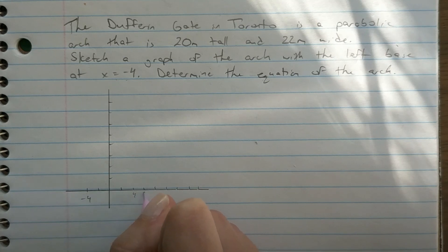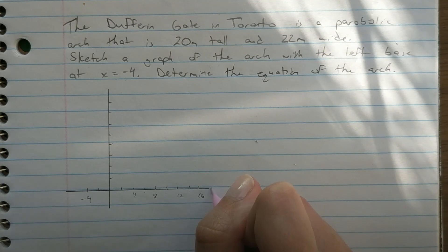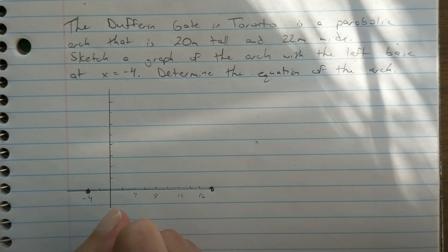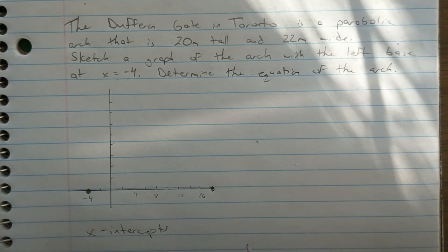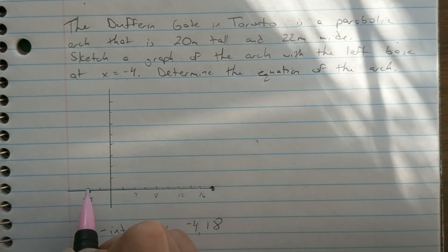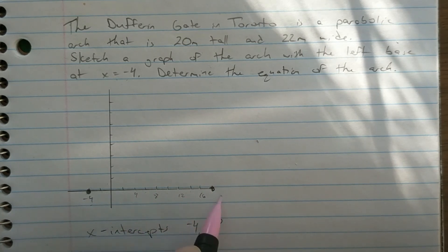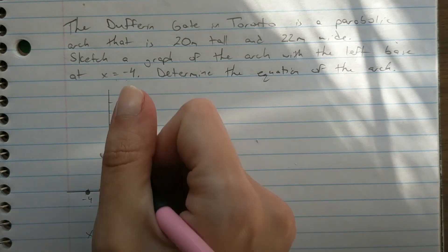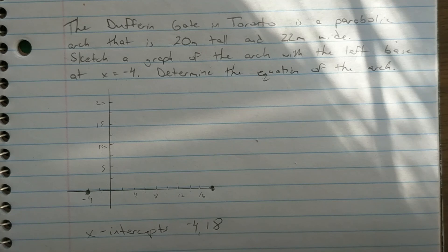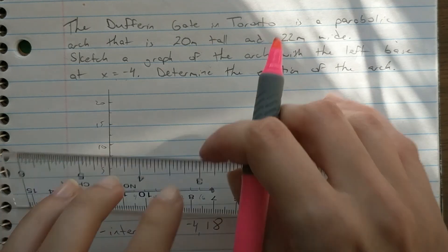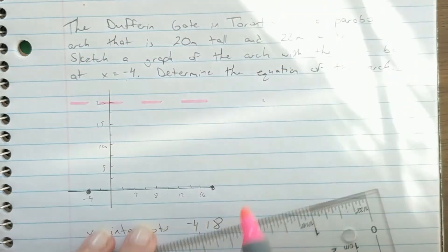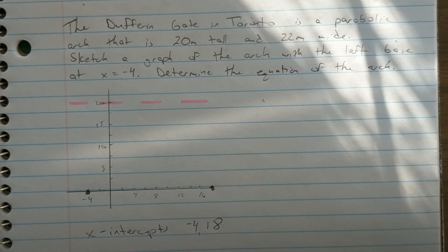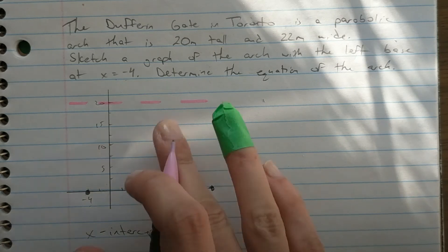22 meters wide means starting at negative 4, it needs to land at positive 18. So I'm going to go negative 4, negative 2, 0, 2, 4, 6, 8, 10, 12, 14, 16, and 18 is right here. So these are our two x-intercepts. So I'm just going to label my x-intercepts are at negative 4 and positive 18 because we knew it started at negative 4 and it had a span of 22 wide. We also know that it's 20 meters tall. So I need to figure out that is going to be my vertex, and I need to figure out where that's going to happen. It's going to be 20 meters somewhere. So we go 5, 10, 15, 20. I know it's going to hit somewhere it's got to be 20 meters tall. Well, we know that the vertex is located exactly halfway between the x-intercepts because it's located along the axis of symmetry. So we need to find our axis of symmetry.